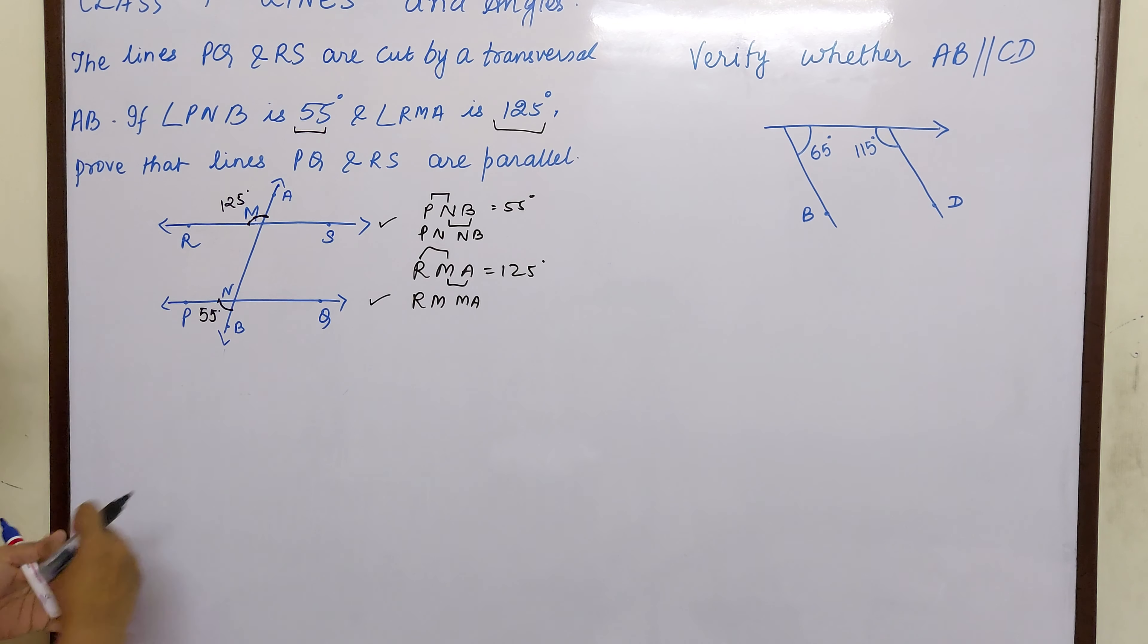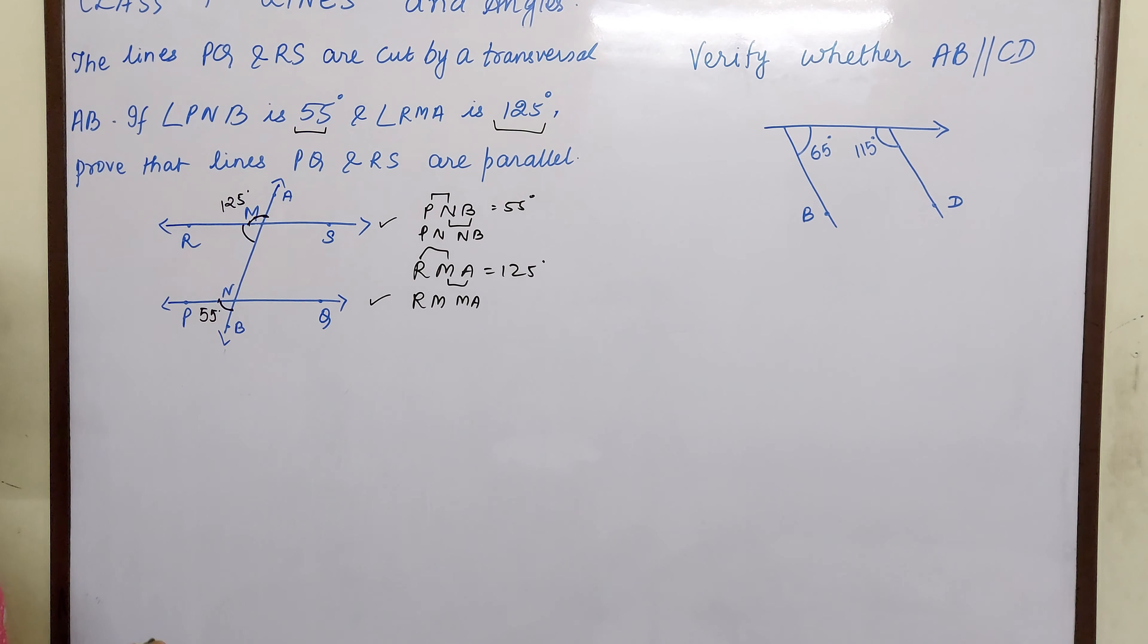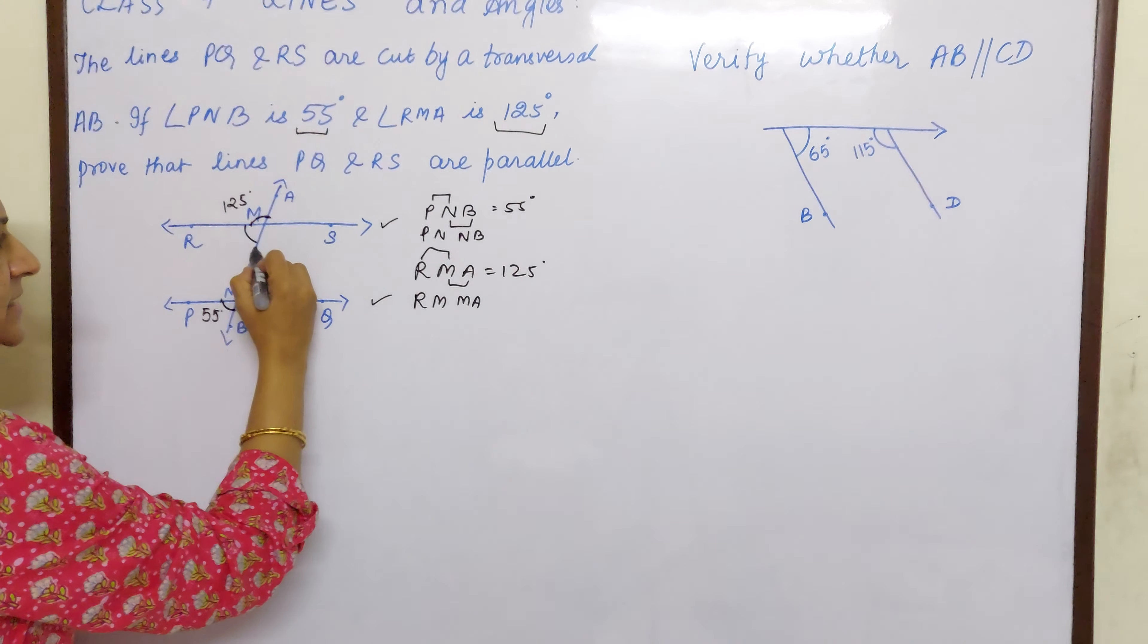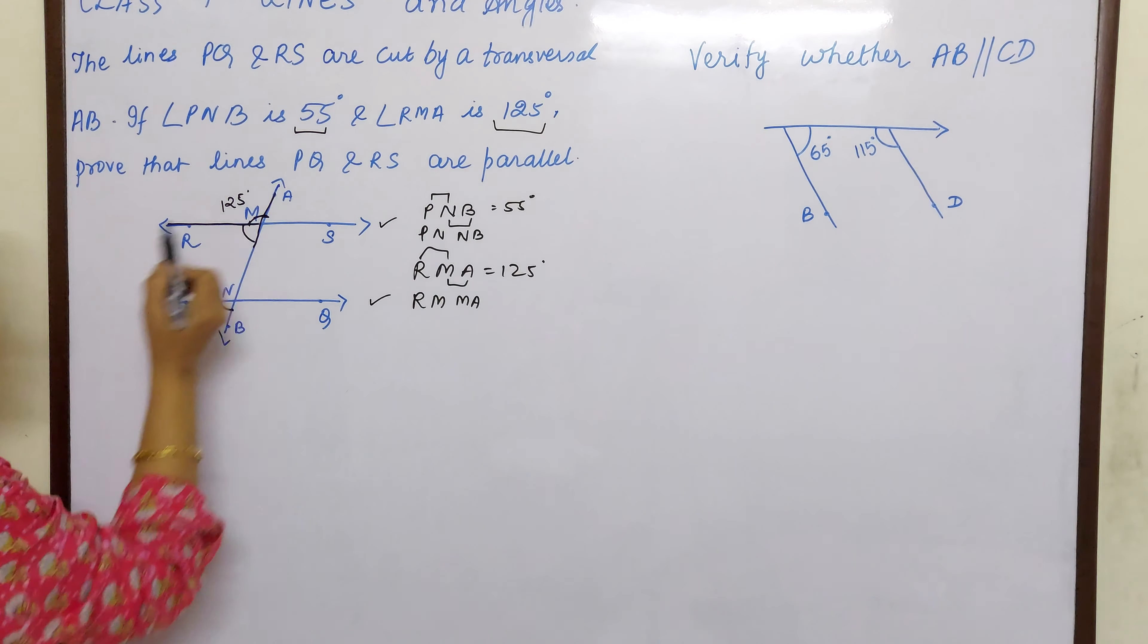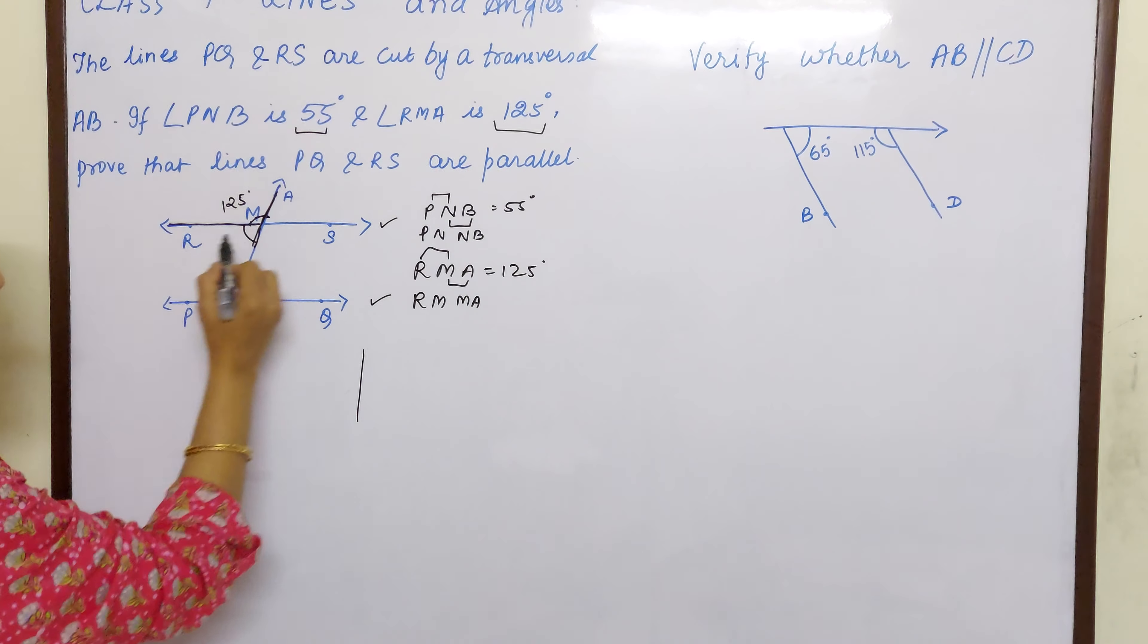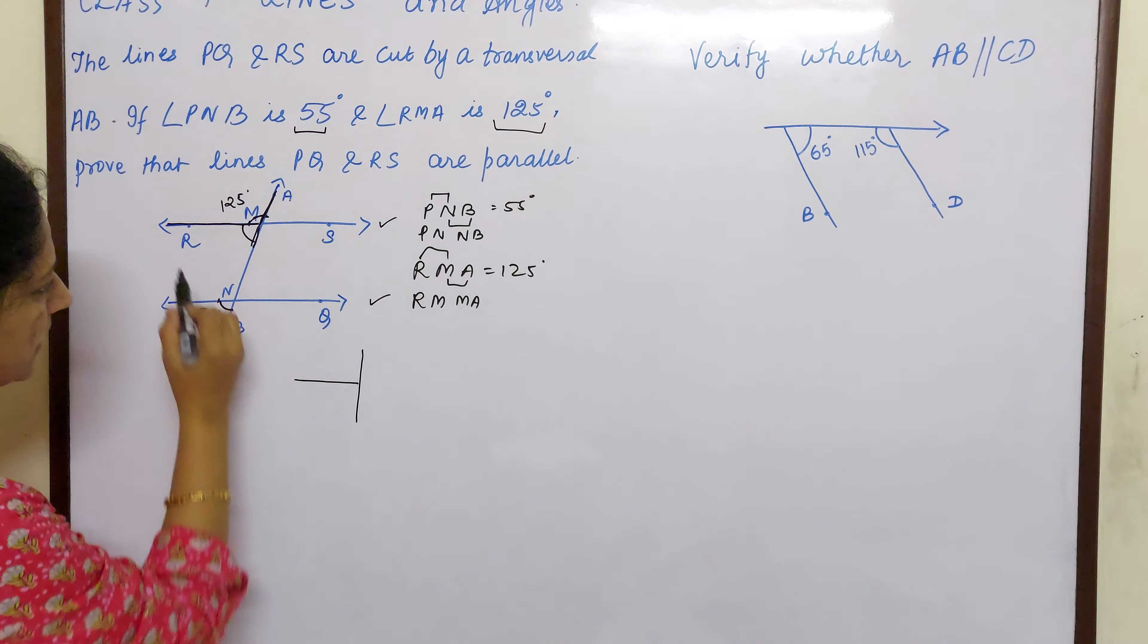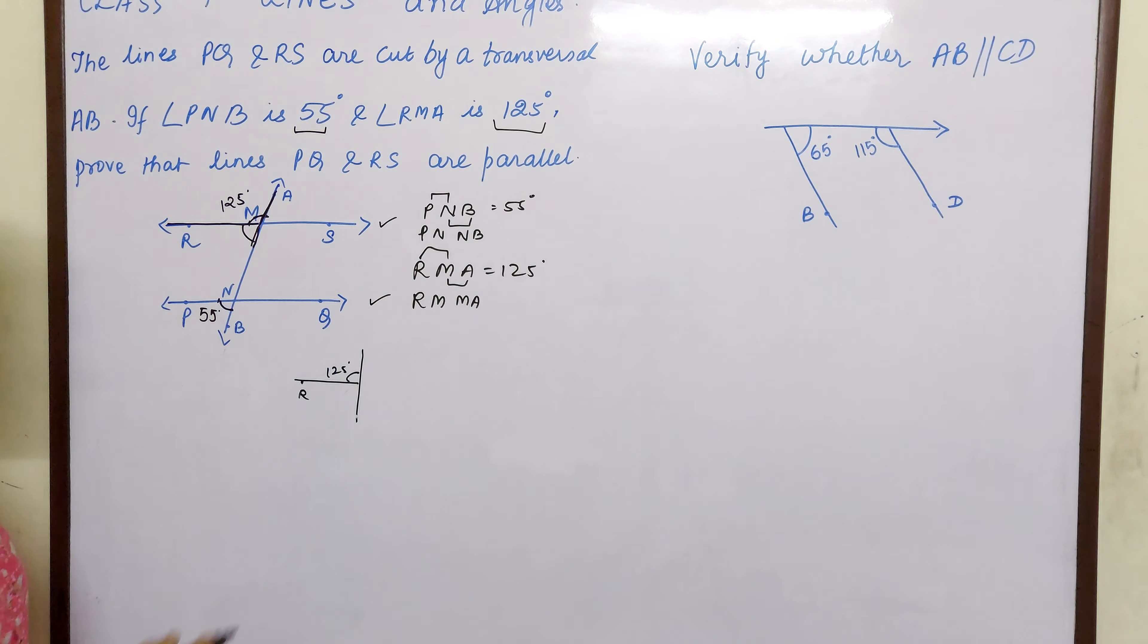Now this is 125. So children what will be this? See, this is a sleeping line. Like this you assume. And this is a ray standing on it. This line. And this is like this, R. R is here. Now if this is 125, what have we learned children?